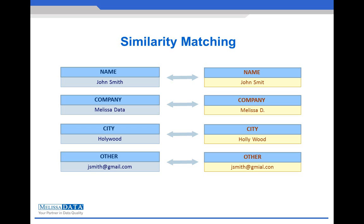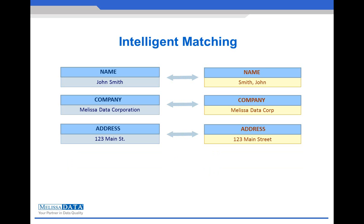If we compare two records through the data quality components, we can see how close they are through a given similarity percentage. The components also include a matching transform that specializes in address, name, and company matching — some of the most commonly used elements for associating records. It is smart enough to recognize and associate unordered people's names, abbreviated company keywords, and even unstandardized addresses. This level of intelligence eliminates underlying factors contributing to irrelevant discrepancies in fuzzy matching, greatly improving the accuracy of record linkage.